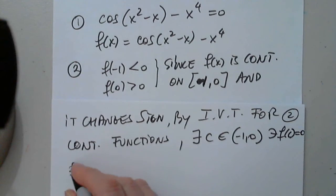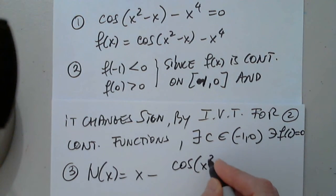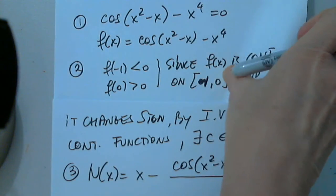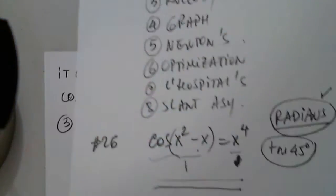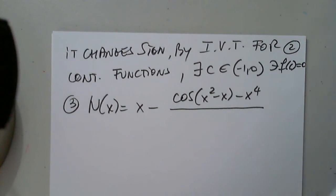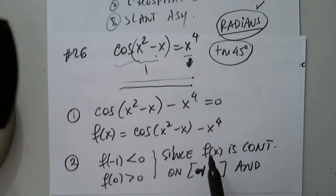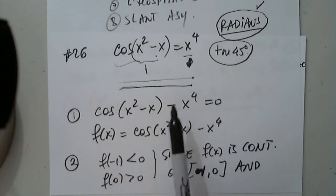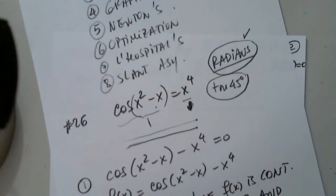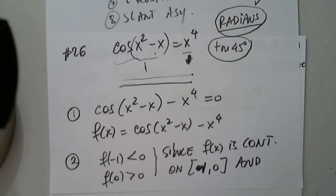By the intermediate value theorem for continuous functions, there exists a c in the interval open negative one, zero, such that f of c is zero. So in number three, I create Newton's function, which is x minus the function, cosine x squared minus x minus x to the fourth over this derivative. I have a question. Yes.